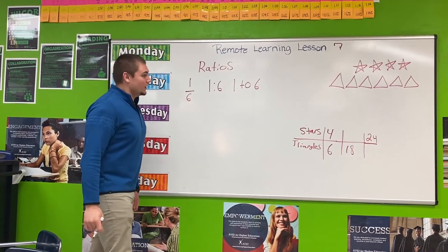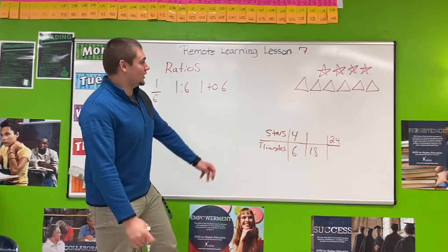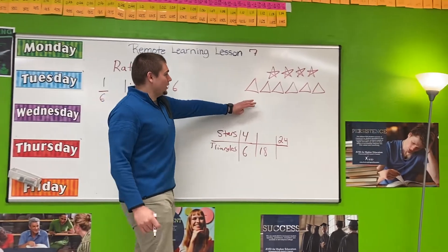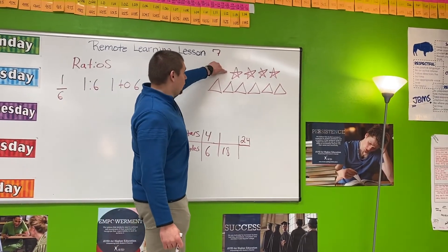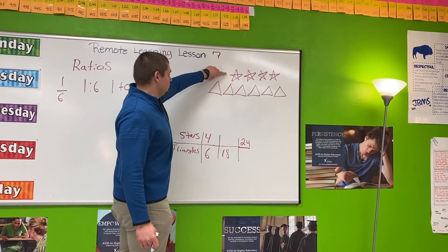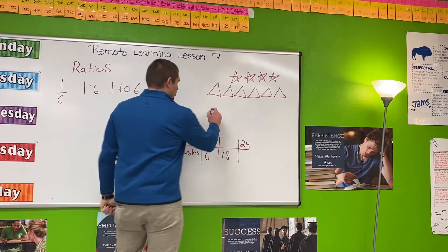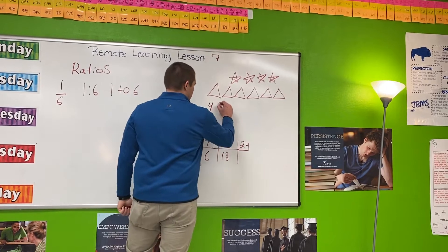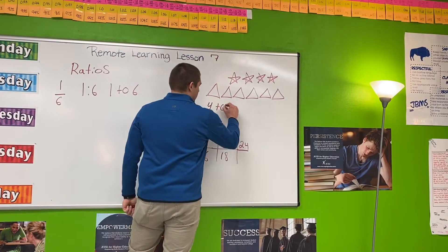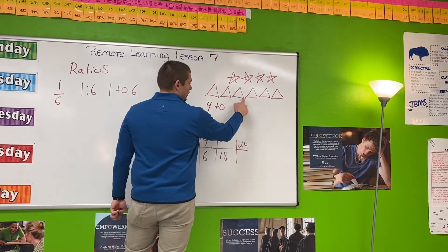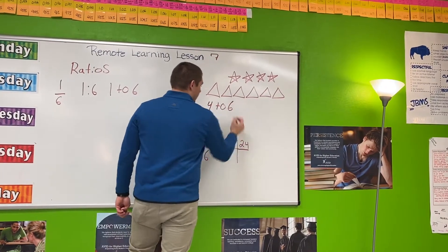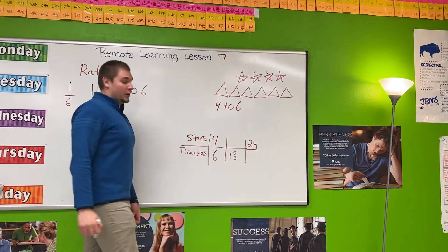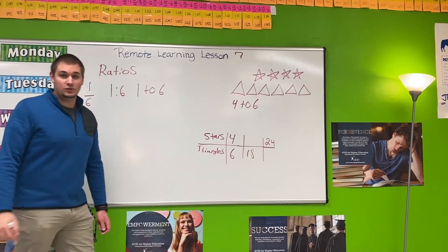Looking at the example over here, I have the ratio of four stars to six triangles. My ratio could be four to six.